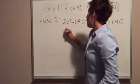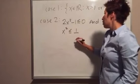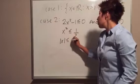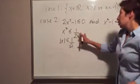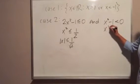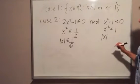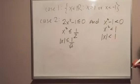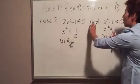Solving Case 2: for the numerator, we bring 1 over and divide both sides by 2, getting x² ≤ 1/2. By the same reasoning as before, this gives |x| ≤ 1/√2. For the denominator, x² < 1 gives us |x| < 1, since the absolute value of x is less than the square root of 1, which is 1.